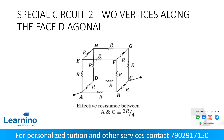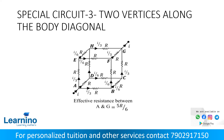Next special case: if the resistance is taken from two vertices along the face diagonal — that means one face, two opposite diagonal points, seen as A and C in the picture — the resistance measured is 3R by 4. Next, if the resistance is taken from two vertices along the body diagonal, that means A and G, the resistance is 5R by 6.